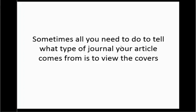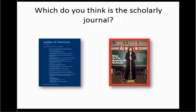Here are two examples of two different journals. Looking at just the covers: Time magazine has a picture and a lot of advertising and blurbs about other articles. Whereas the Journal of Education — which meets the sign of 'Journal of' in its title — has a very plain cover that simply lists the articles and their authors. Sometimes it's very easy to tell which journal is the scholarly one versus the popular one.